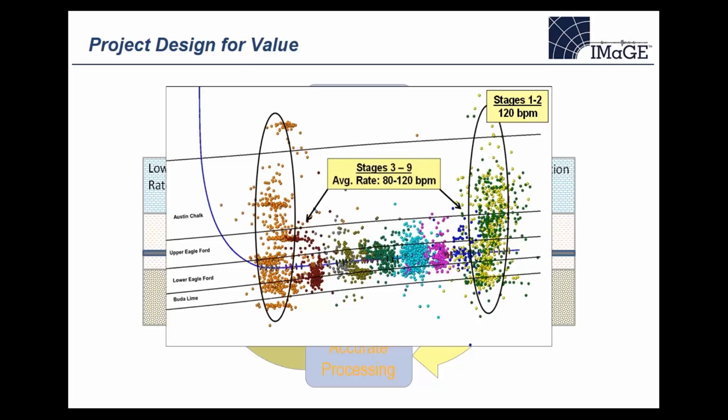This example is from the Eagle Ford Shale, shown in cross-section. The blue lateral well is drilled in the lower Eagle Ford, and the lower/upper Eagle Ford package is the target. Stage by stage — different colors for different fracture stages — the injection rate was changed for each stage, and microseismic was used as a diagnostic to see how fracture geometry changes.